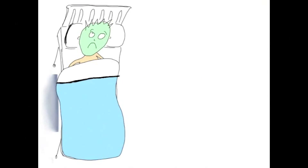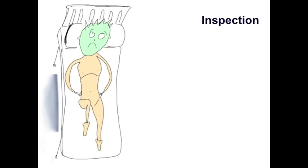When we examine the patient, we need to expose them from nipples to knees. Patients with appendicitis sometimes lie with their right hip flexed, as it's much more comfortable for them. If they were to straighten it, the psoas muscle may irritate anything inflamed that's overlying it.